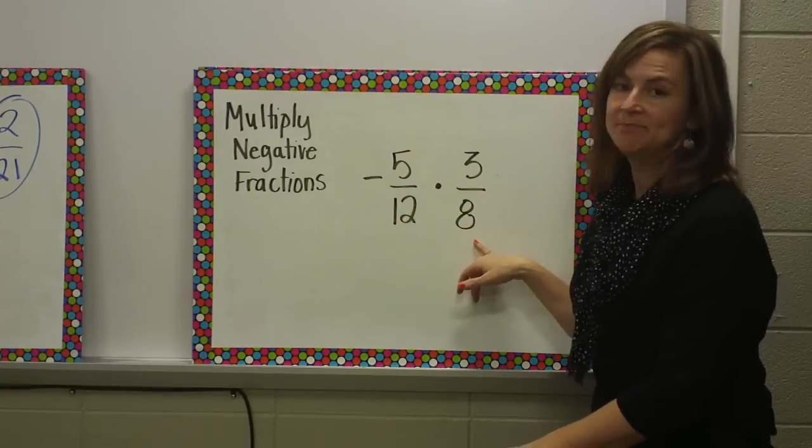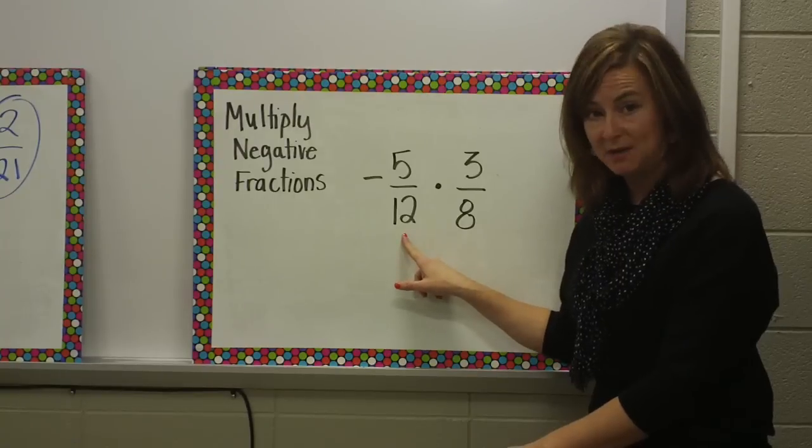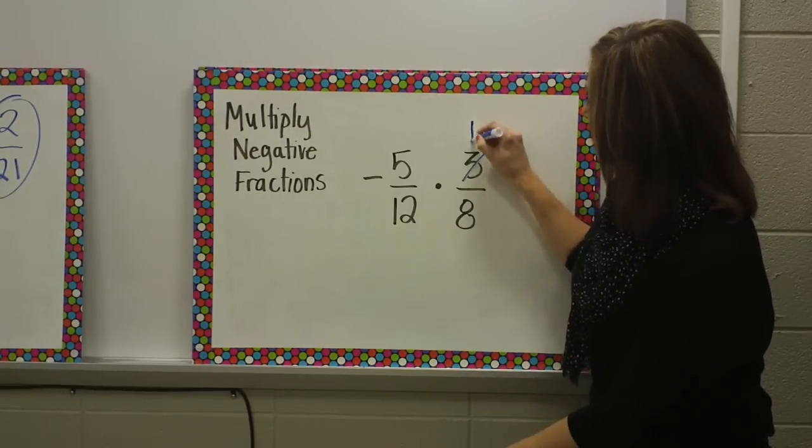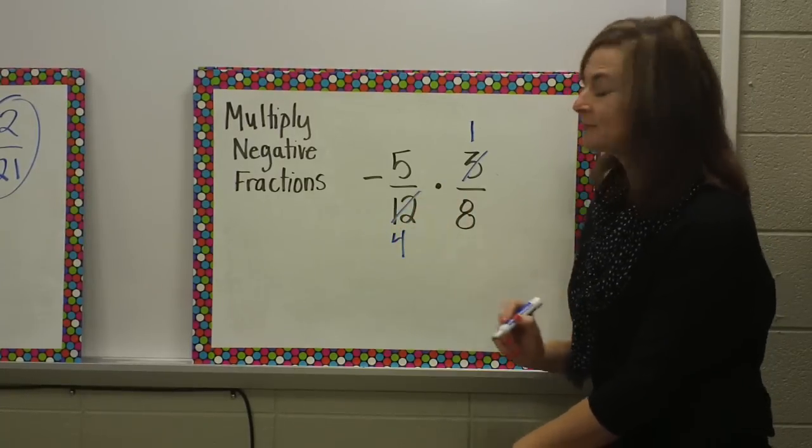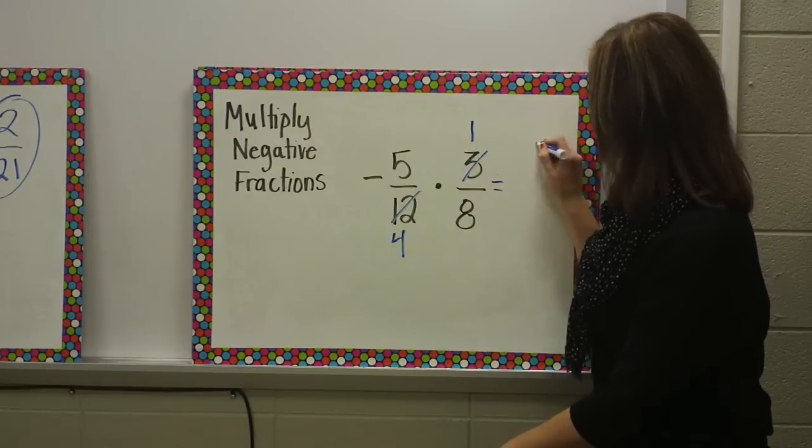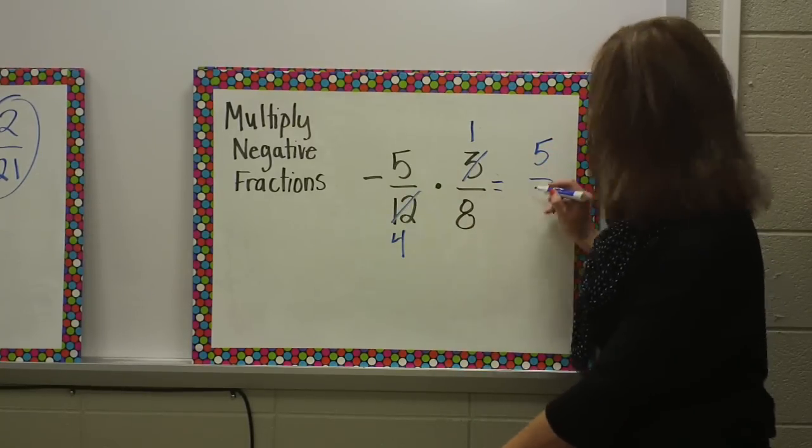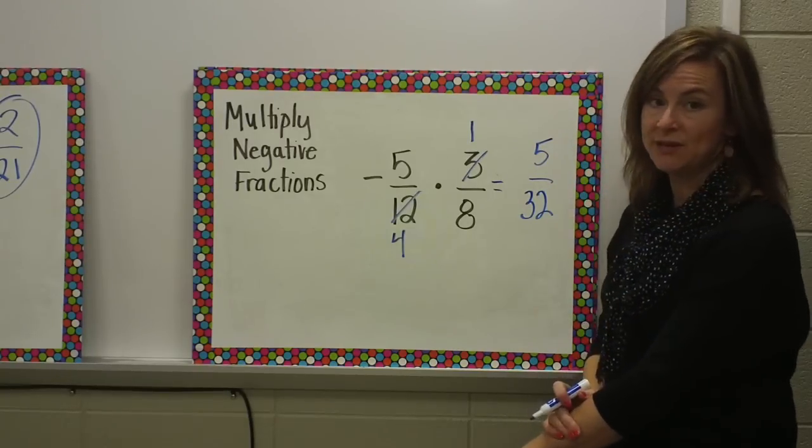I start with five and eight, and I cannot simplify that, but three and twelve can both be divided by three. Three divided by three is one. Twelve divided by three is four. Now, I multiply across. Five times one is five. Four times eight is thirty-two. I'm going to double-check that I cannot simplify any further, and I cannot.